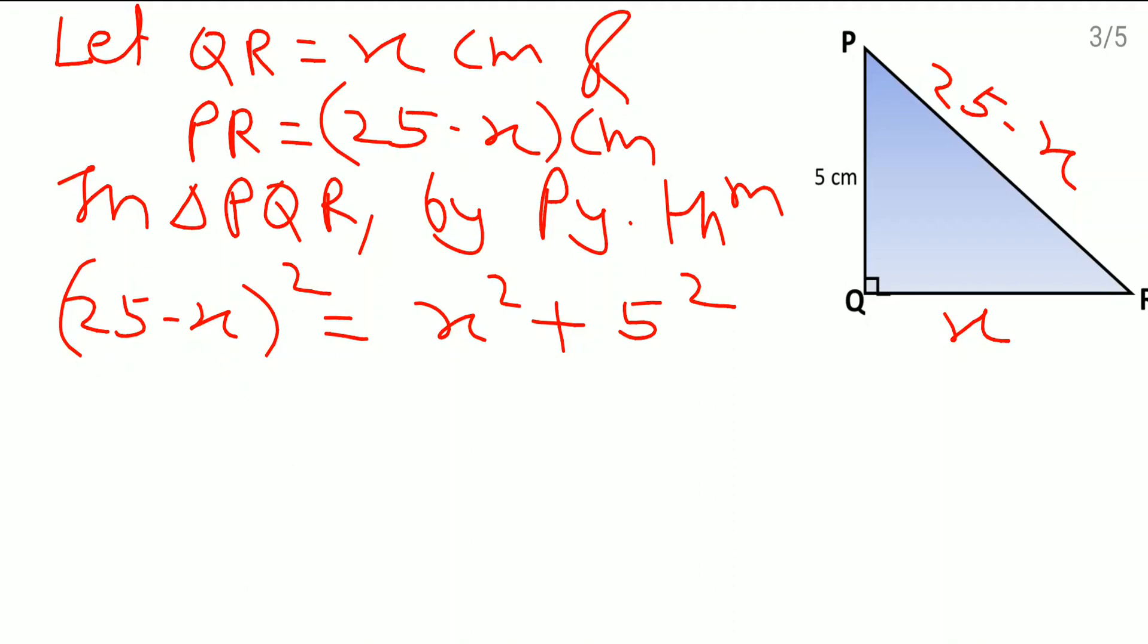First A square it means that 25 square which comes as 625 minus 2 times A and B. So 2 times A, A is this one and B is this one right. So here it will come as minus 50X and plus B square. B square is this one right X. So it will come as plus X square which is equal to X square plus 5 square.